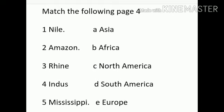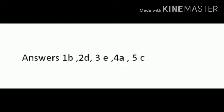All of you listen to the answers. First answer B, second D, third E, fourth A, and fifth C. Listen to the answer correctly: Nile - Africa, Amazon - South America, Rhine - Europe, Indus - Asia, Mississippi - North America. All of you correct your answer.